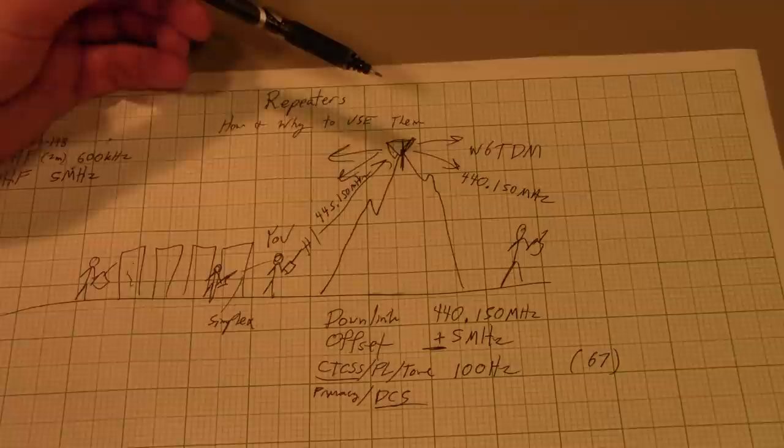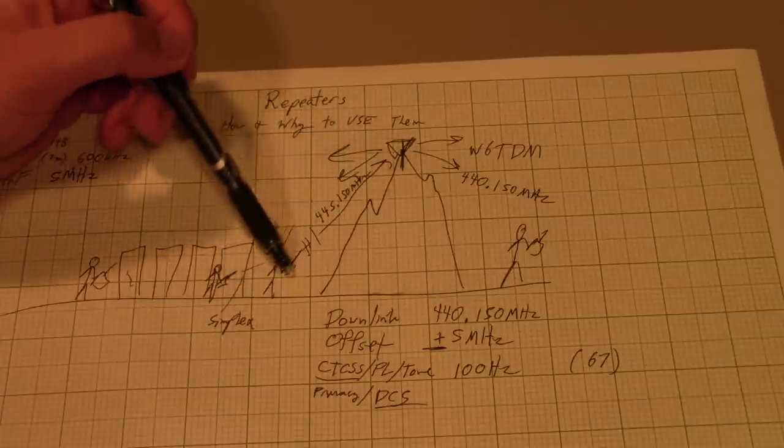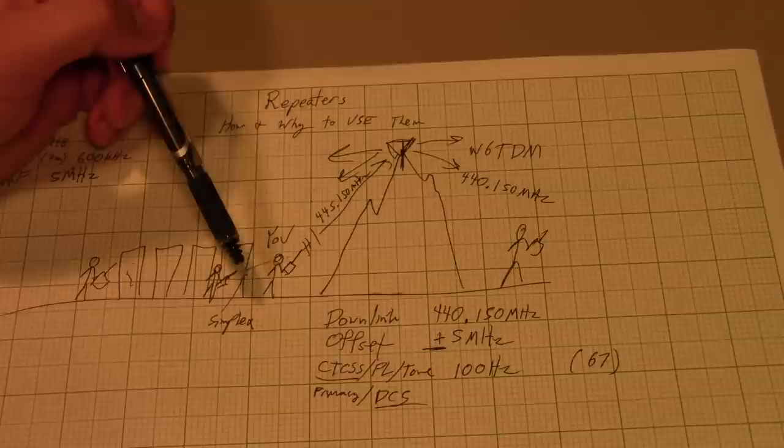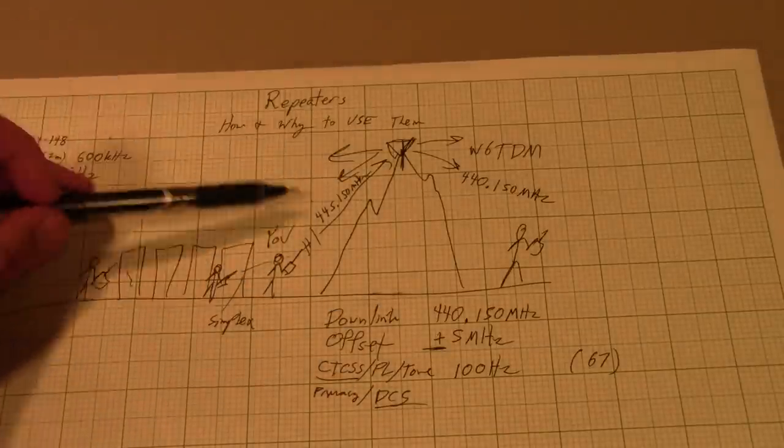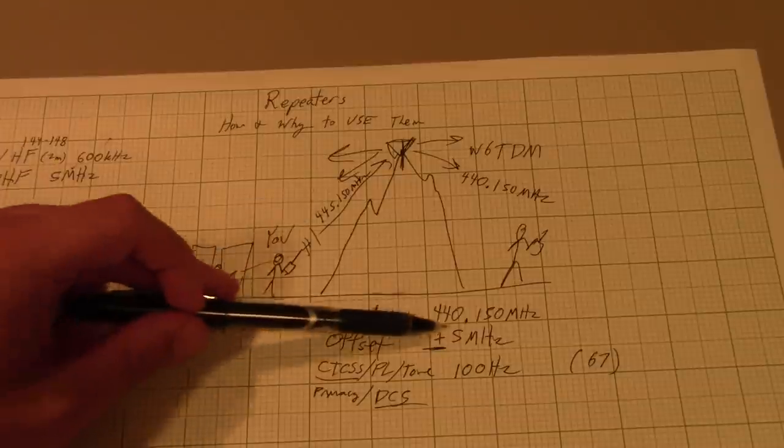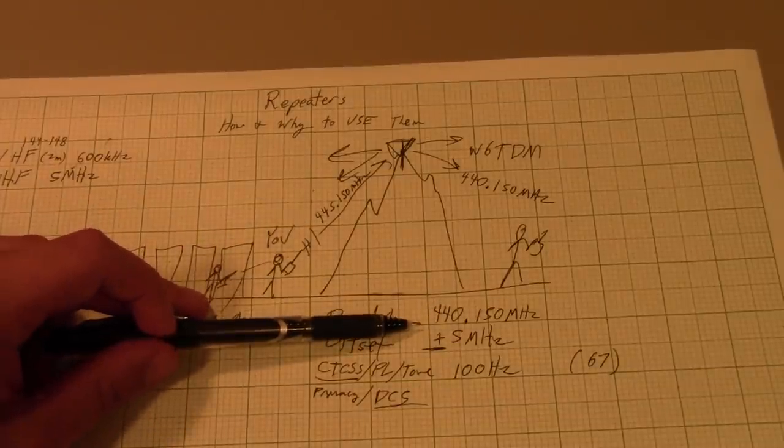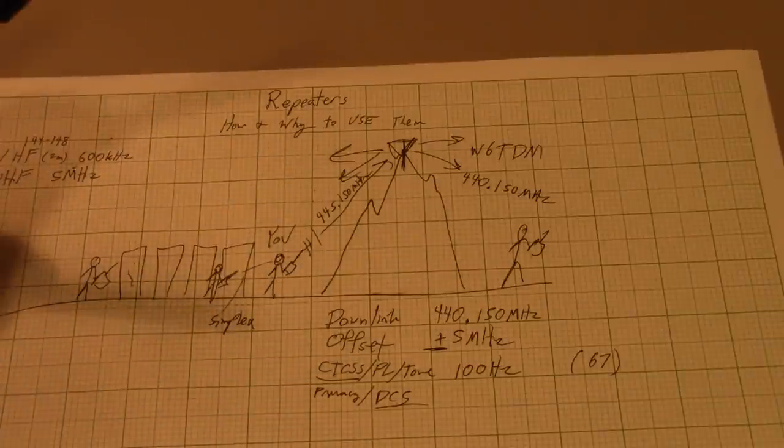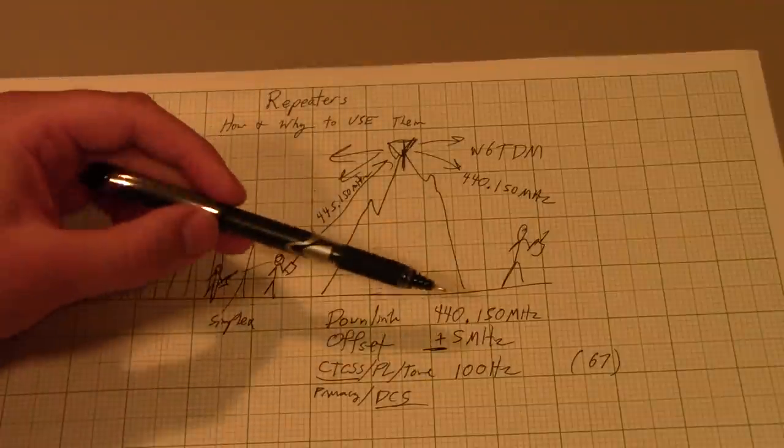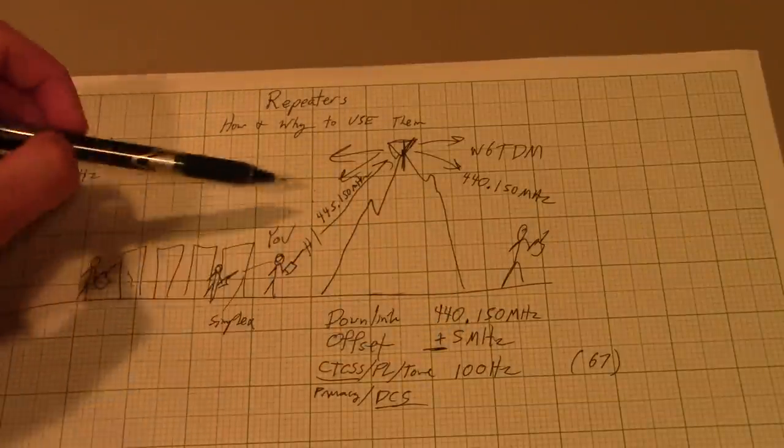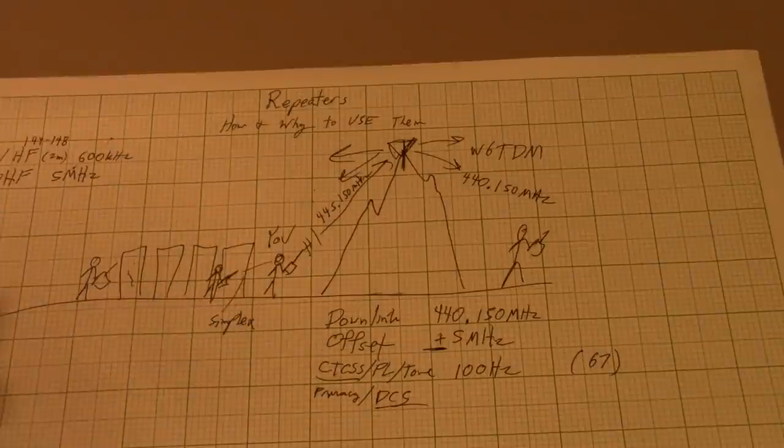So that's about it. You transmit on the uplink frequency, which no one ever actually gives you, because you have to do the math given the downlink frequency that you listen on, which you're going to spend most of your time listening, hopefully. If you spend more time transmitting to a repeater than listening, no one else will probably want to talk to you, and you wouldn't be giving them a chance. But you'd need the downlink frequency, the offset, and the CTCSS.